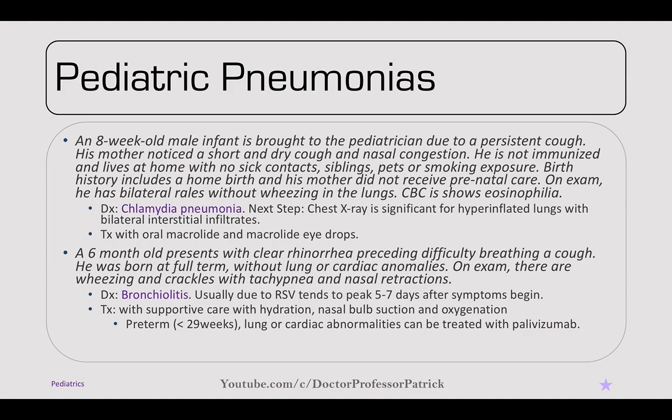A six-month-old has clear rhinorrhea preceding difficulty breathing and a cough. Born at full term without lung or cardiac abnormalities. On exam, wheezing and crackles with tachypnea and nasal retractions — bronchiolitis. Usually due to RSV, peaking five to seven days after symptoms begin and very common in winter months. Treatment is supportive care with hydration, bulb suctioning, and oxygenation. For preterm infants less than 29 weeks or those with lung or cardiac abnormalities, palivizumab can be used.